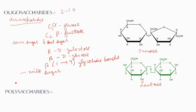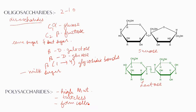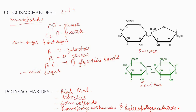The next group is polysaccharides. Polysaccharides are polymers of monosaccharide units with high molecular weight, up to a million. They are usually tasteless and form colloids. Polysaccharides are of two types: homopolysaccharides and heteropolysaccharides.